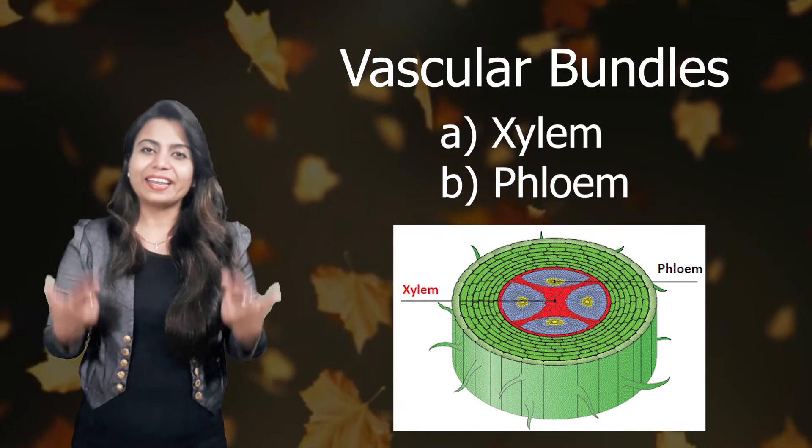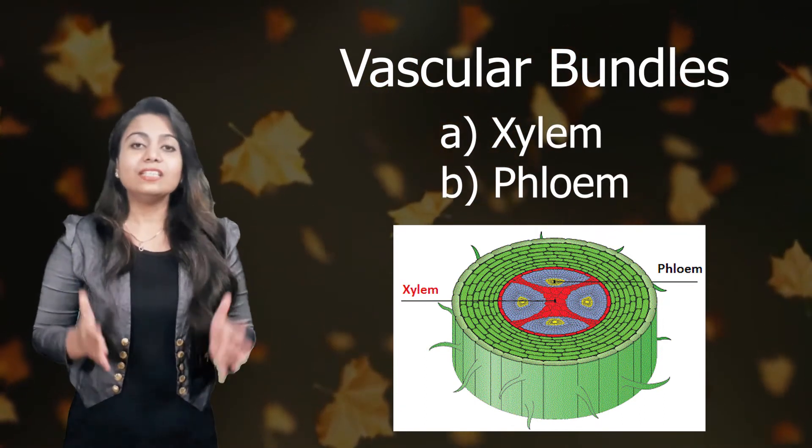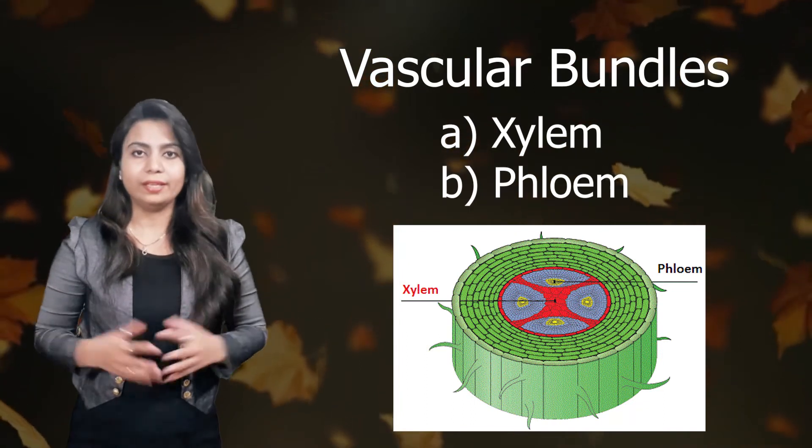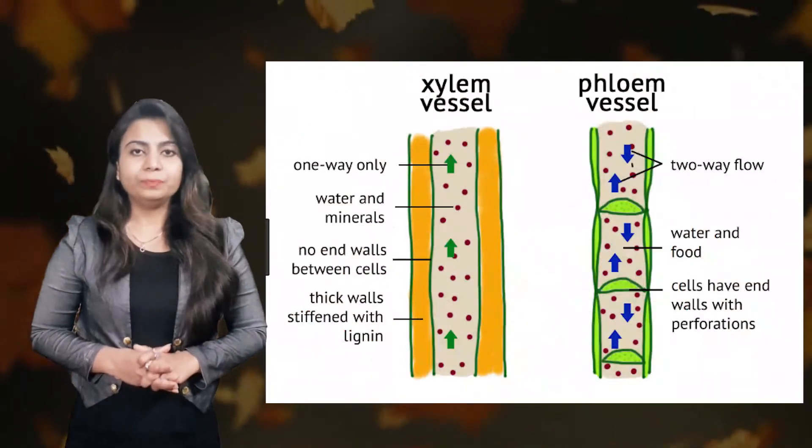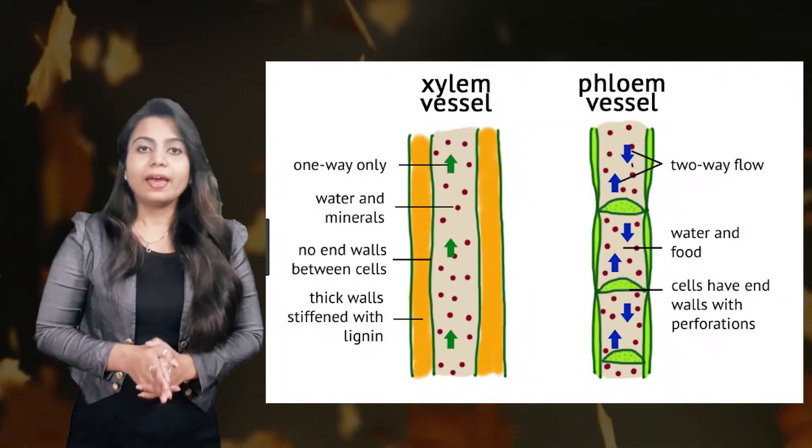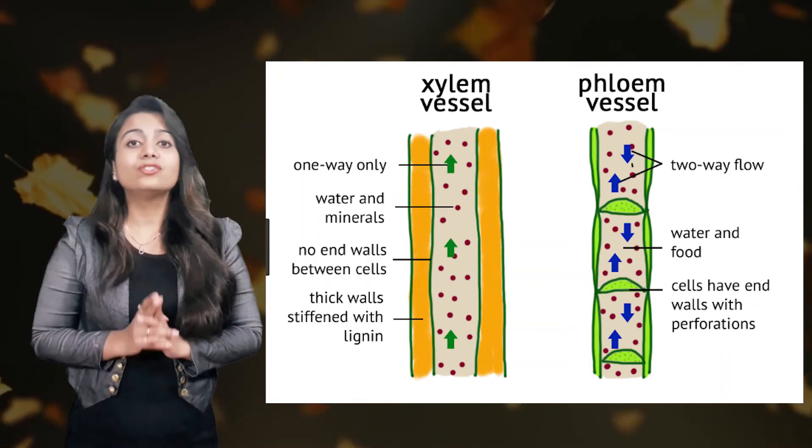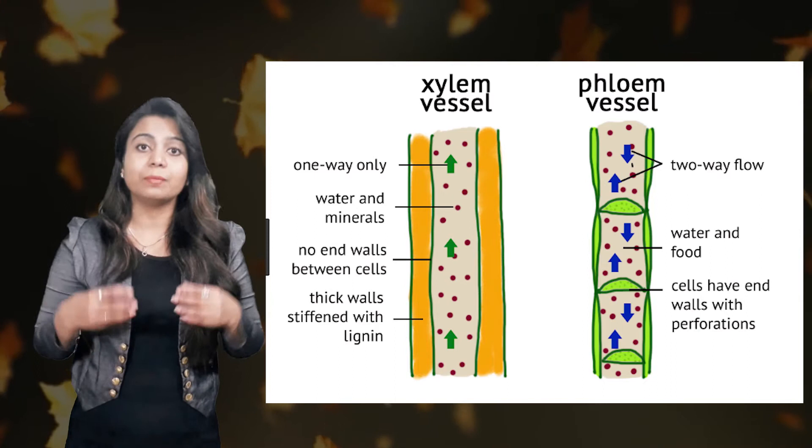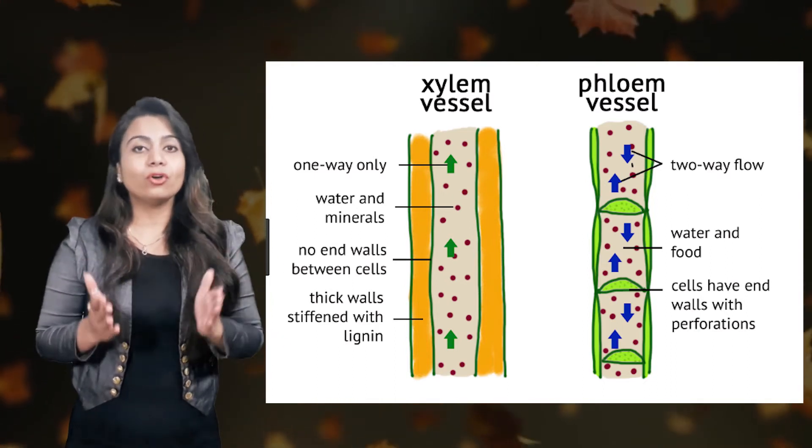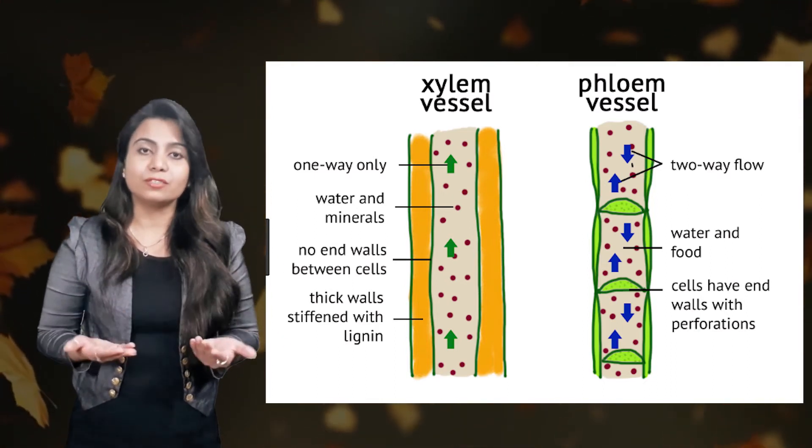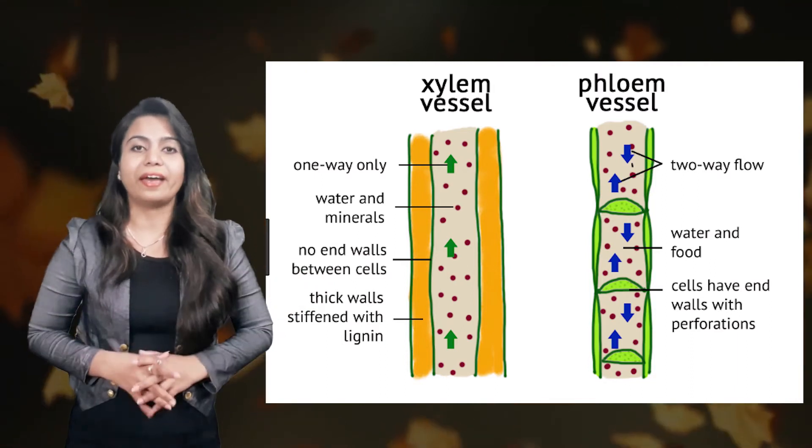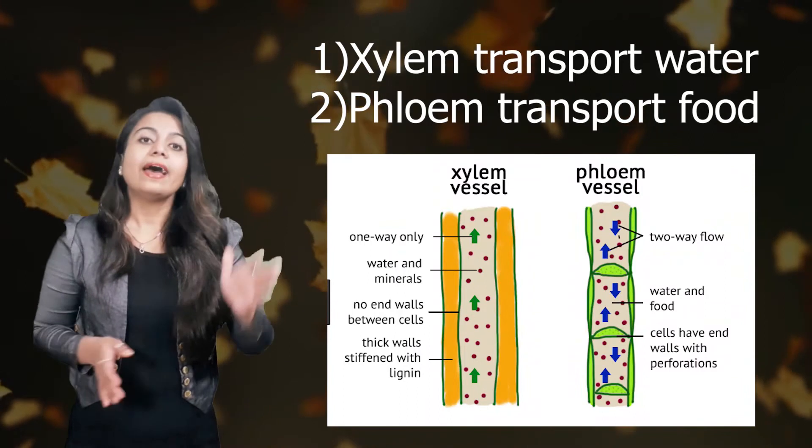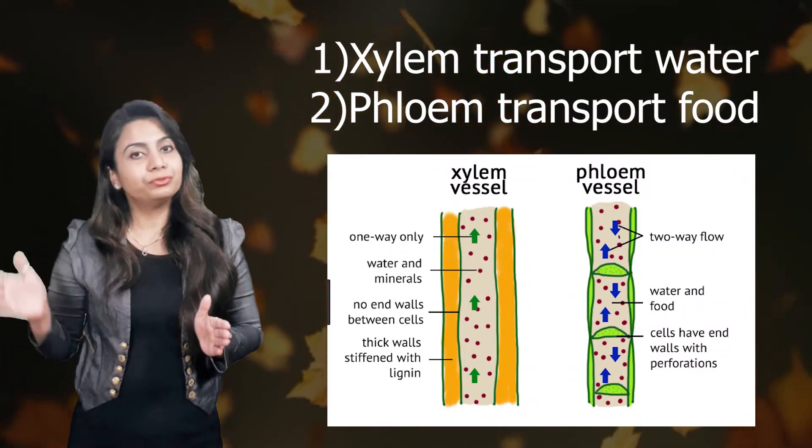First one is xylem and second is phloem. And these vascular bundles are present in leaves in the form of leaf veins. Now, actually xylem and phloem are tubes or we can say they are the pipelines. Just like in our body blood vessels, xylem and phloem are the pipelines in plants for transportation of water and food. And basically, xylem transports water and phloem transports food.